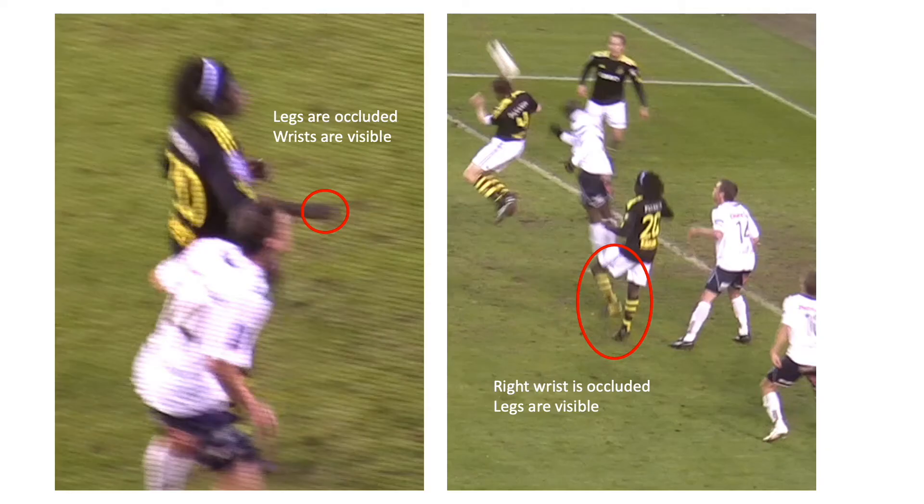Here is an example where occlusion is solved by multi-view images. By combining wrist information from the left image and leg information from the right image, we are able to recover all joints.